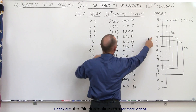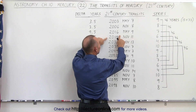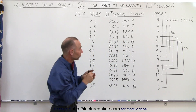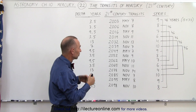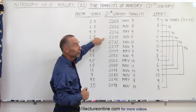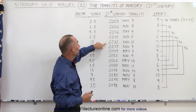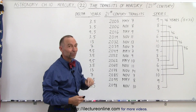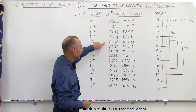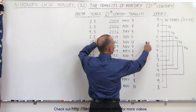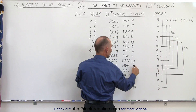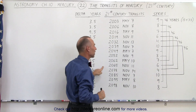The next series is series 6. We will have a transit in 2019 — that's next year, in November. As of the date of the shooting of this video, it'll be a little bit more than a year from now. Catch that one, otherwise you'll have to wait another 13 years before you have another transit of Mercury across the disk of the Sun. This will be part of series 6, November 11th. And 46 years later, November 11th, we'll have another transit.